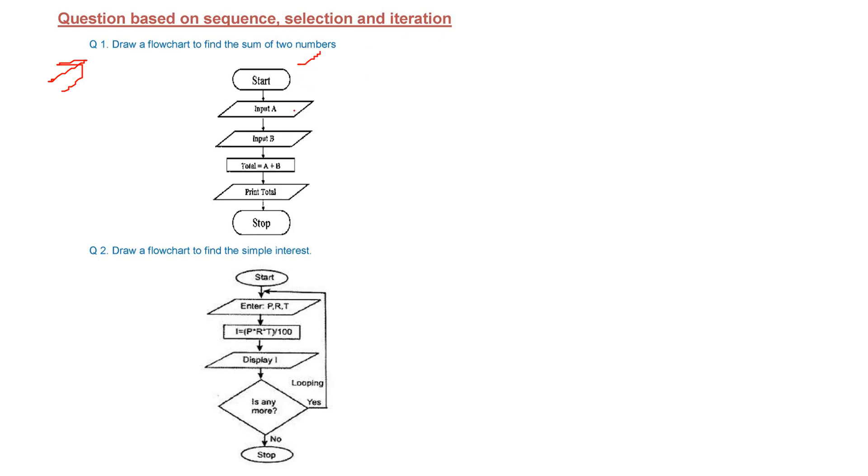then we start, we input A, input B. So this input is shown in the parallelogram. We can combine these two also, means input A, B.